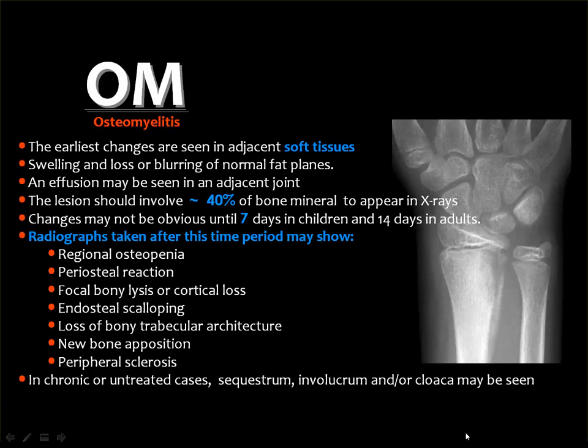The early sign of acute osteomyelitis is changes in the soft tissues adjacent to the affected bone, which may become swollen, with blurring of the fat planes around the bone or near the joint. Sometimes, because most inflammatory changes are near the joint in the epiphysis or metaphysis, you may have a joint effusion of the nearby joint. For the lesion to appear on plain X-ray, about 40 percent of bone mineral density has to be lost.